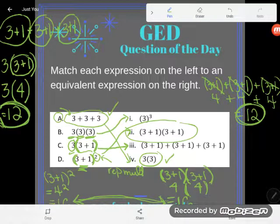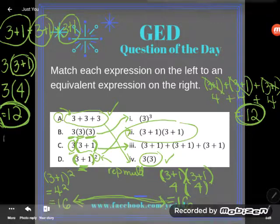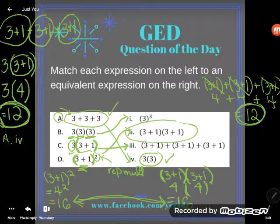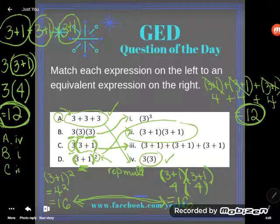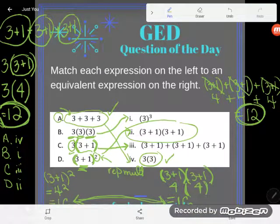So we have our answers. I'll just reiterate: A was four, B matched with one, C matched with three, and D matched with two. Great! If you have any questions about this or any other GED math topic, be sure to drop it in the comments and I'll do my best to answer it.